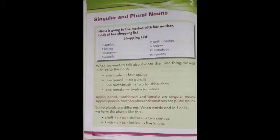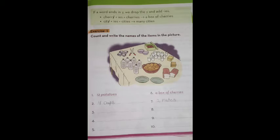If the word ends in Y, we drop the Y and add IES. So cherry becomes cherries, a box of cherries. City, we drop the Y and add IES, so what is it? Cities. Many cities.